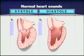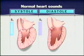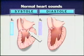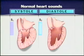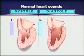Before auscultating the heart, let's review normal heart sounds. Closure of the heart valves creates a pair of audible heart sounds. The first sound, S1, accompanies mitral valve closure. The second sound, S2, accompanies aortic valve closure. Pulmonic and tricuspid valve closure may contribute to these sounds.